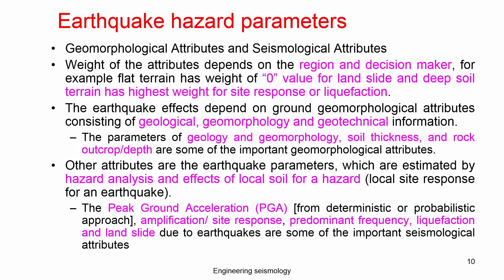Earthquake hazard parameters can be broadly classified into two categories: geomorphological attributes and seismological attributes. Geomorphological attributes are parameters arising from the geology and morphology of the region — such as soil formation, soil type, elevation level, and bedrock depth. Seismological attributes are parameters estimated considering the earthquake data — for example, amplification, predominant frequency, and liquefaction, where earthquake data is required as input.